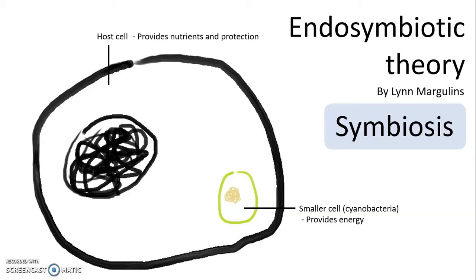Eventually, the cyanobacteria became an organelle of the host called chloroplast, which is specialized in carrying out photosynthesis to generate energy. Because this symbiotic relationship occurred within a cell, it's called endosymbiotic theory.